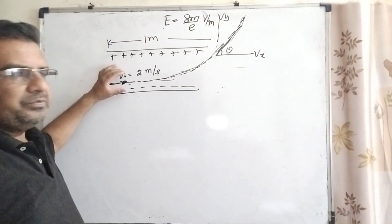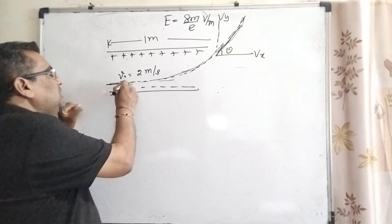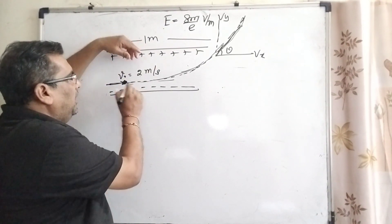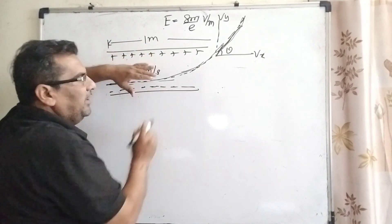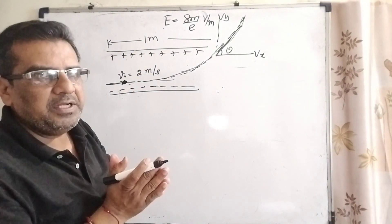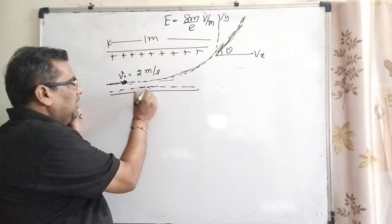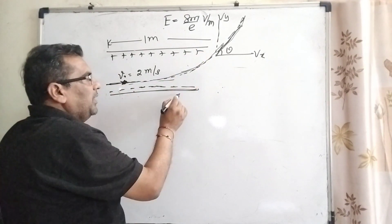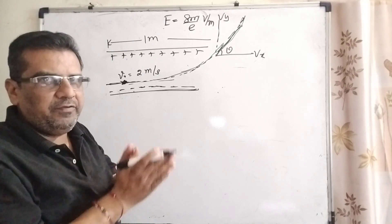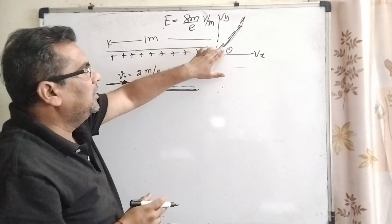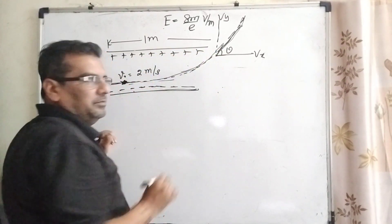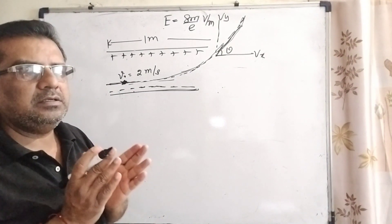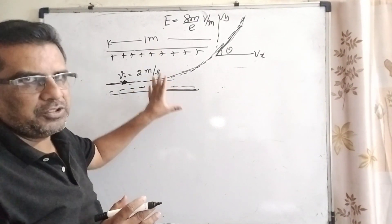Now you can see here one electron enters between the two charged plates. As you know very well, like charges repel each other. So therefore, the negative plate repels this electron towards the positive plate. So we can say that it is deviated. We have to find out the deviation angle.